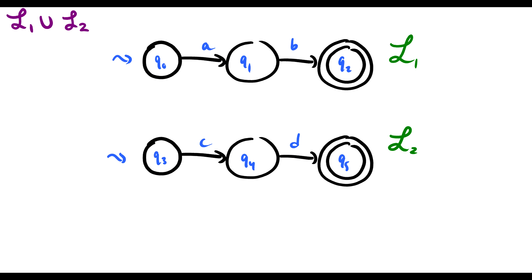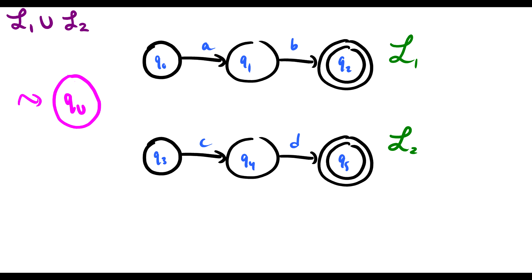First, the union. I want to take these two finite state machines for L1 and L2 and combine them so that it accepts either the strings in L1 or the strings in L2. We're going to make use of empty strings here. To take the union, I'm going to make a new start state. I'm going to get rid of the old start states and make a new start state, which I'll call QUnion. With the empty string, I'm going to send it either to Q3 or to Q0.